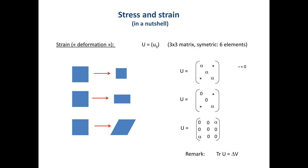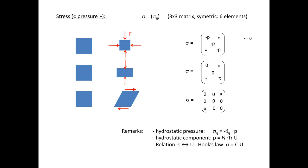That's strain. Now we come to stress. Stress is also a three-by-three symmetric matrix and involves forces on a surface. When you go from uniform compression, this stress matrix is diagonal with equal coefficients along the diagonal — this is the number we call pressure in everyday life. This is called hydrostatic pressure.